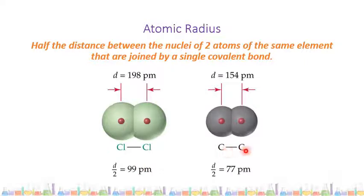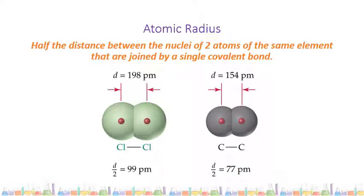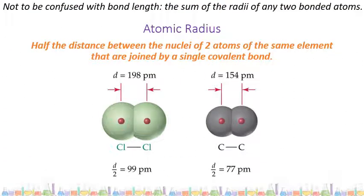Carbon to carbon — a single covalent bond between them. You measure the diameter, the distance from one nucleus to the other, and then half it to get your atomic radius. There's an important distinction to be made here between atomic radius and bond length. Bond length is the sum of the radii of any two bonded atoms. Atomic radius — you have to have two atoms of the same element in order to estimate this.